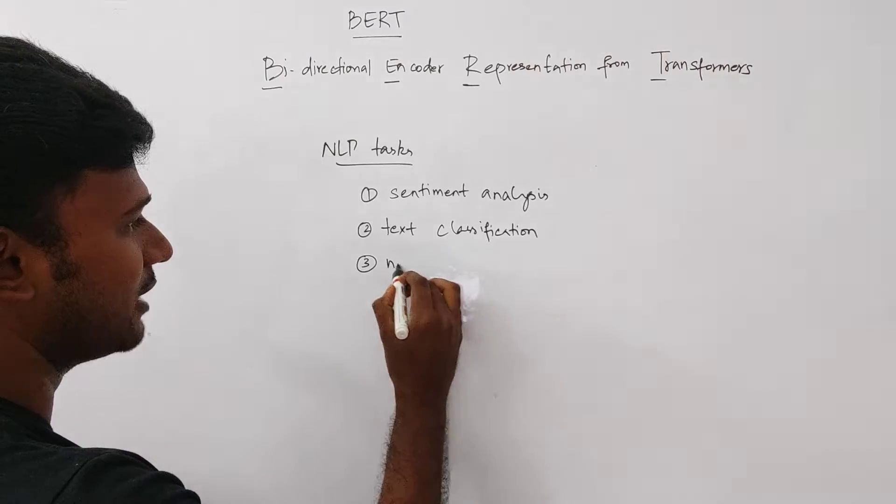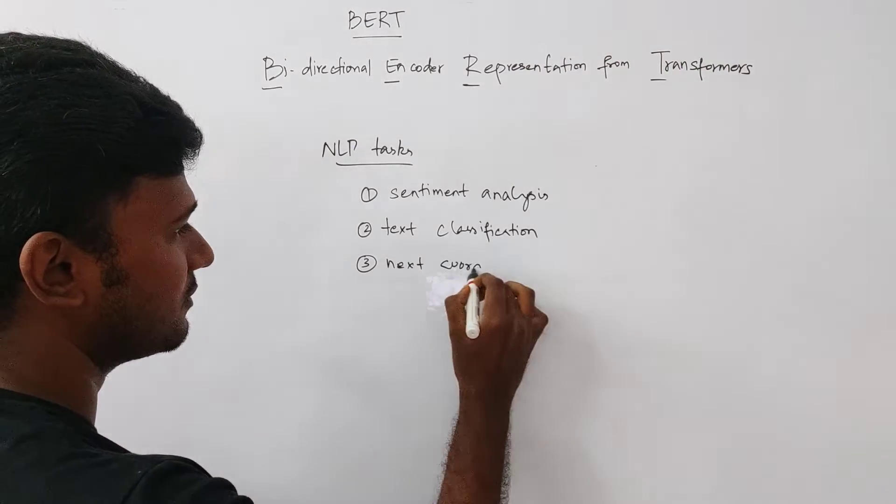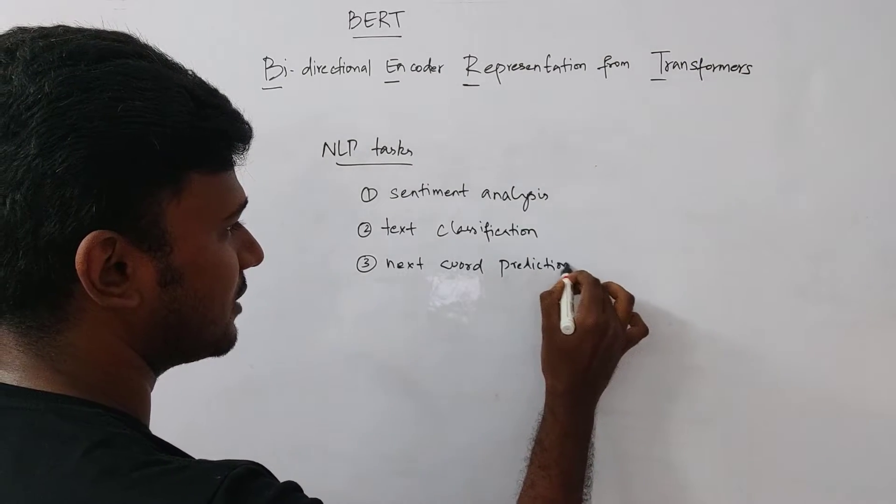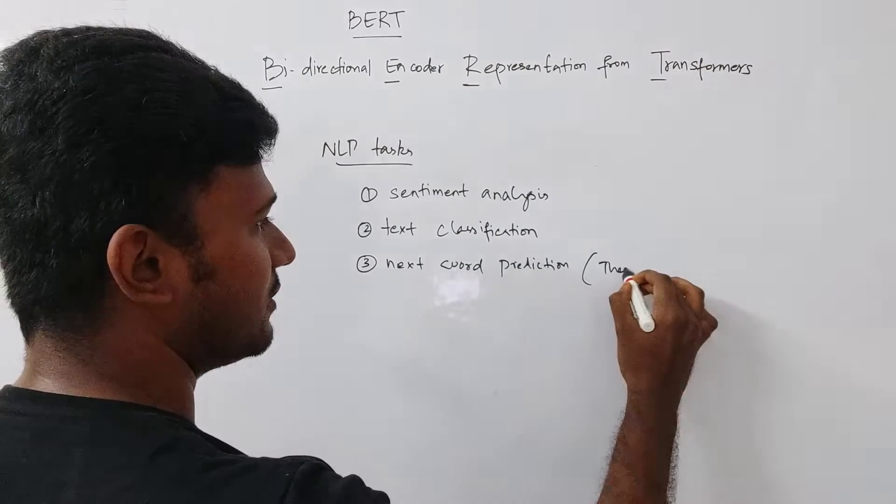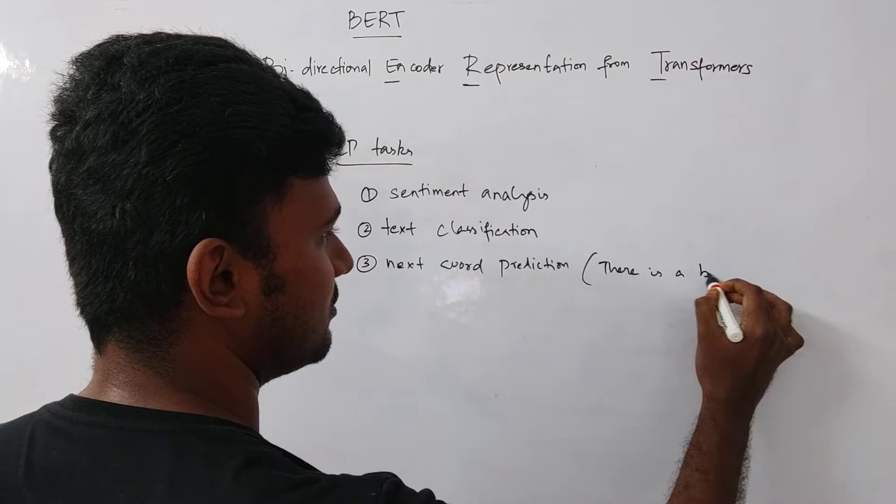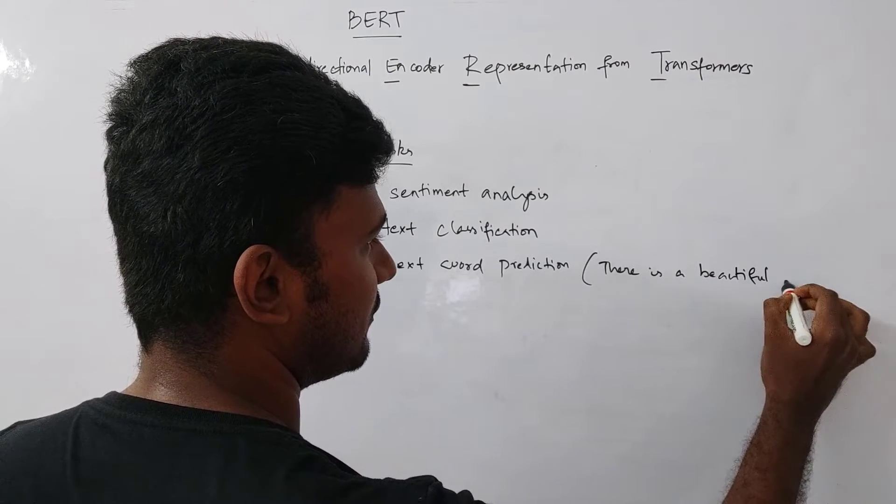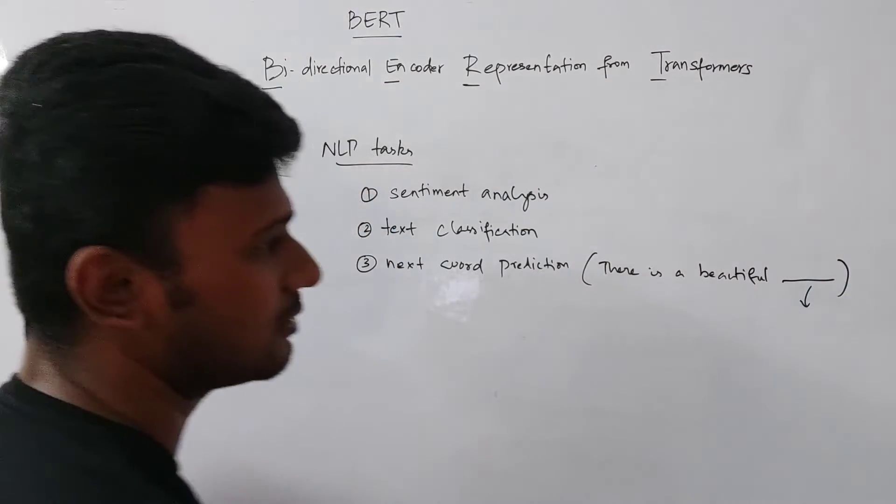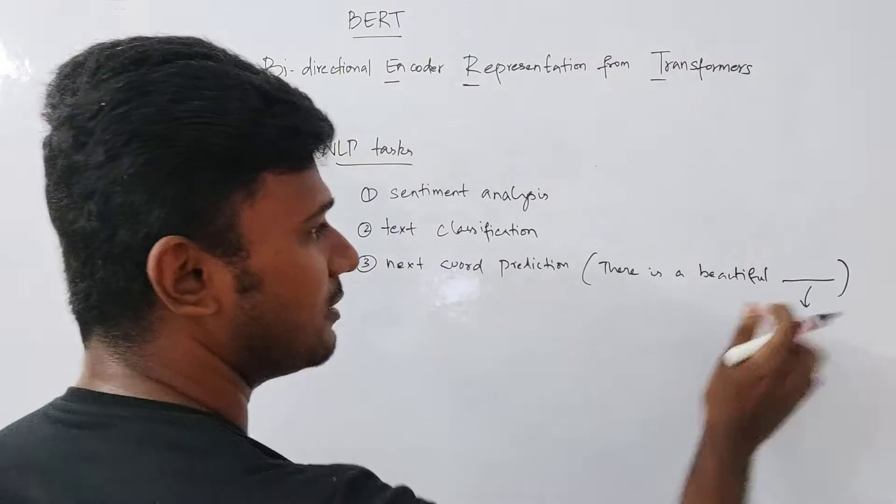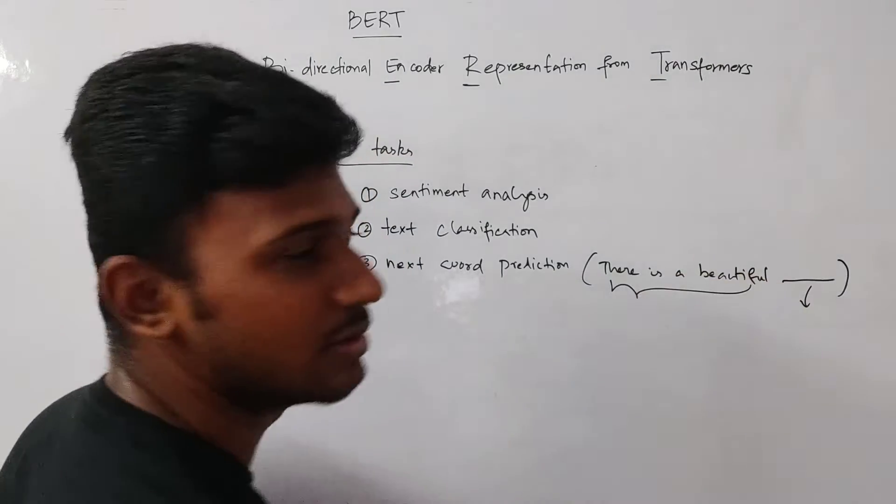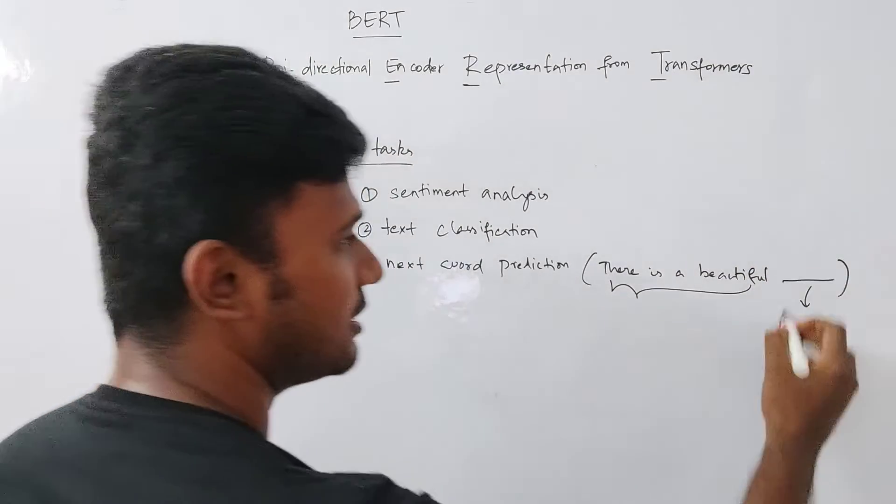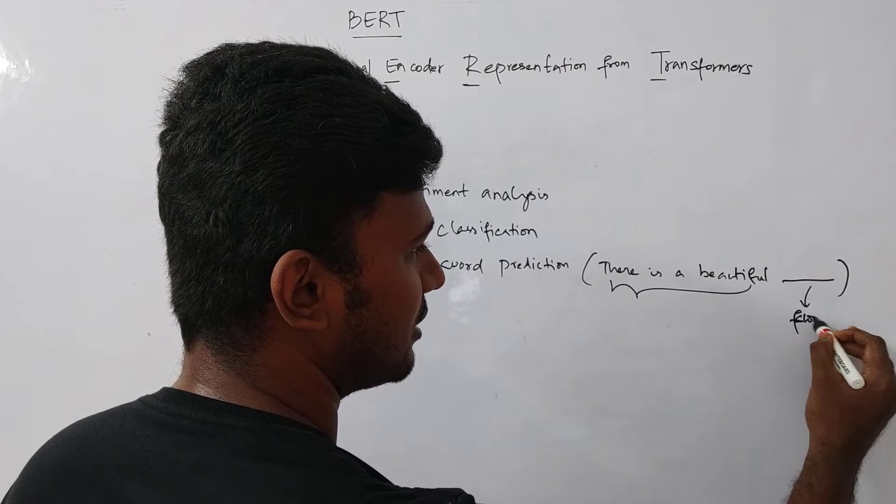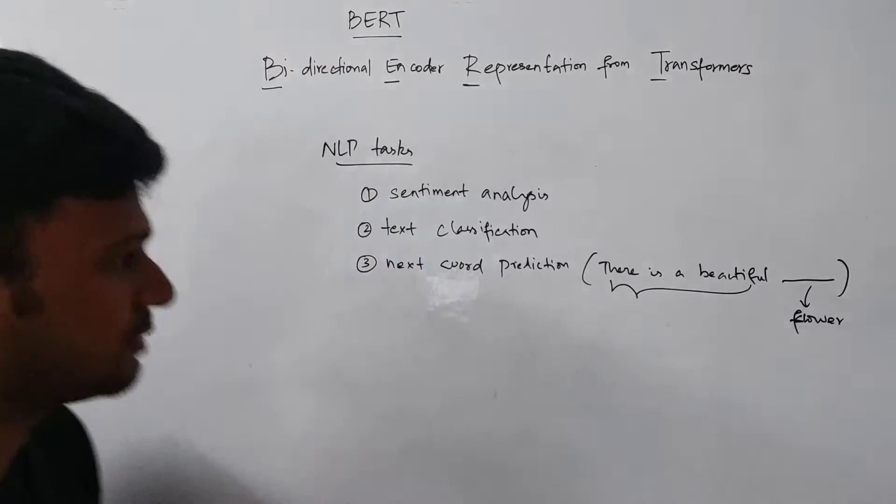And third one, we have next sentence or next word prediction. So next word prediction is something like, for example, there is a beautiful... Then we can have a blank here. And basically BERT can predict what would be the word here based on the previous context. So this is called next word prediction. For example, here it could be there is a beautiful flower or something like that.